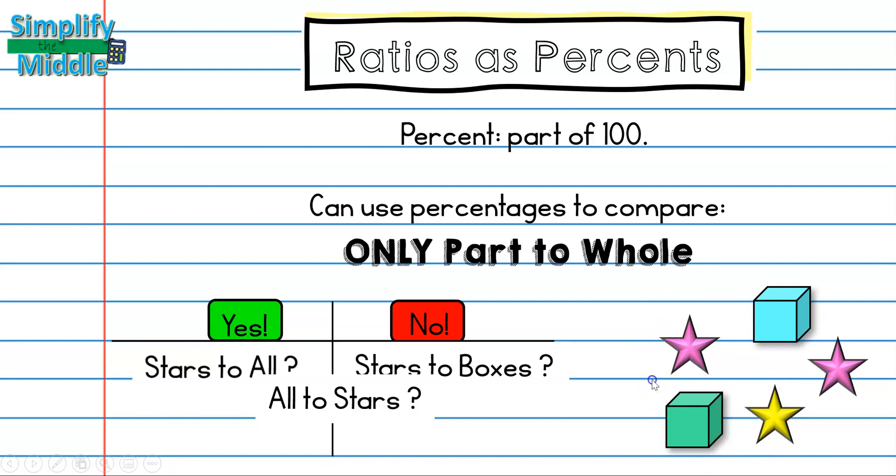What about all to stars? I do use a whole in this ratio, however, it's not written second and that makes a difference, so I cannot use all to stars. I cannot use a percent to describe that ratio. Finally, we have boxes to all. Boxes is a part and all is a whole, so yes, I can use a percent to describe boxes to all.